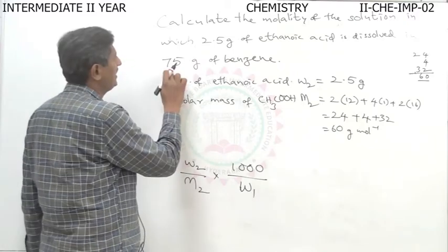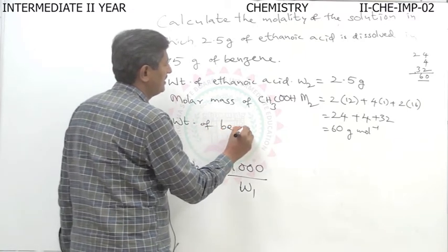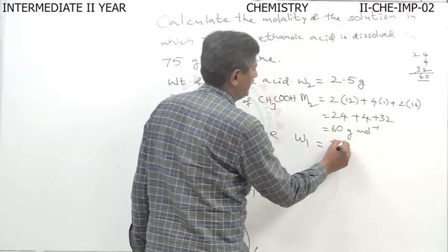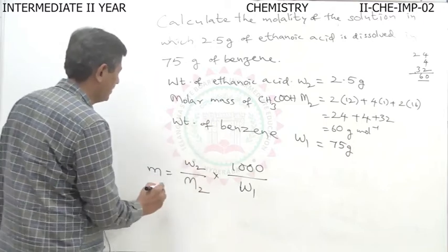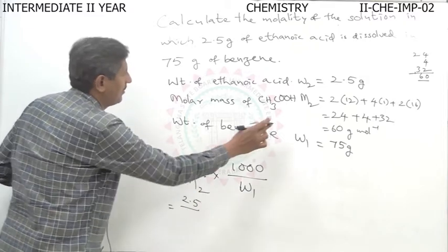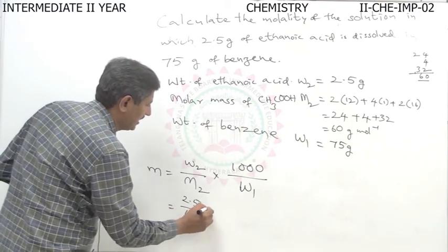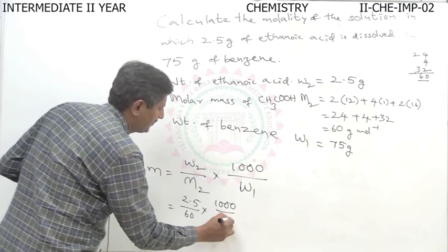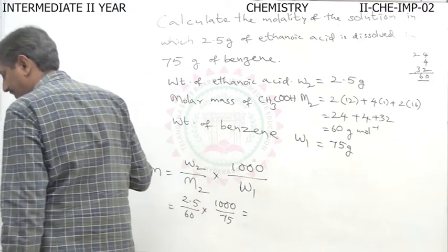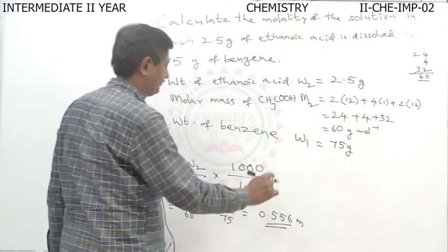The molar mass is 60 grams per mole. Benzene here is the solvent, given by W1 = 75 grams. Substituting into the formula: W2 = 2.5, divided by molar mass 60, multiplied by 1000 divided by 75. This comes as 0.55 molal.